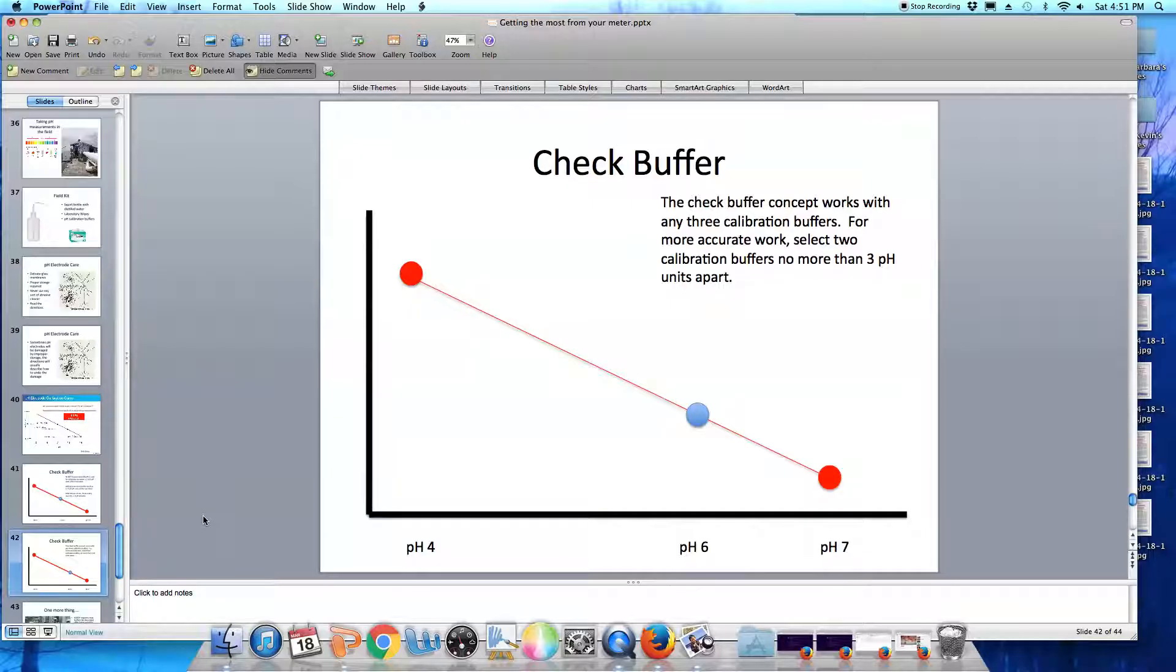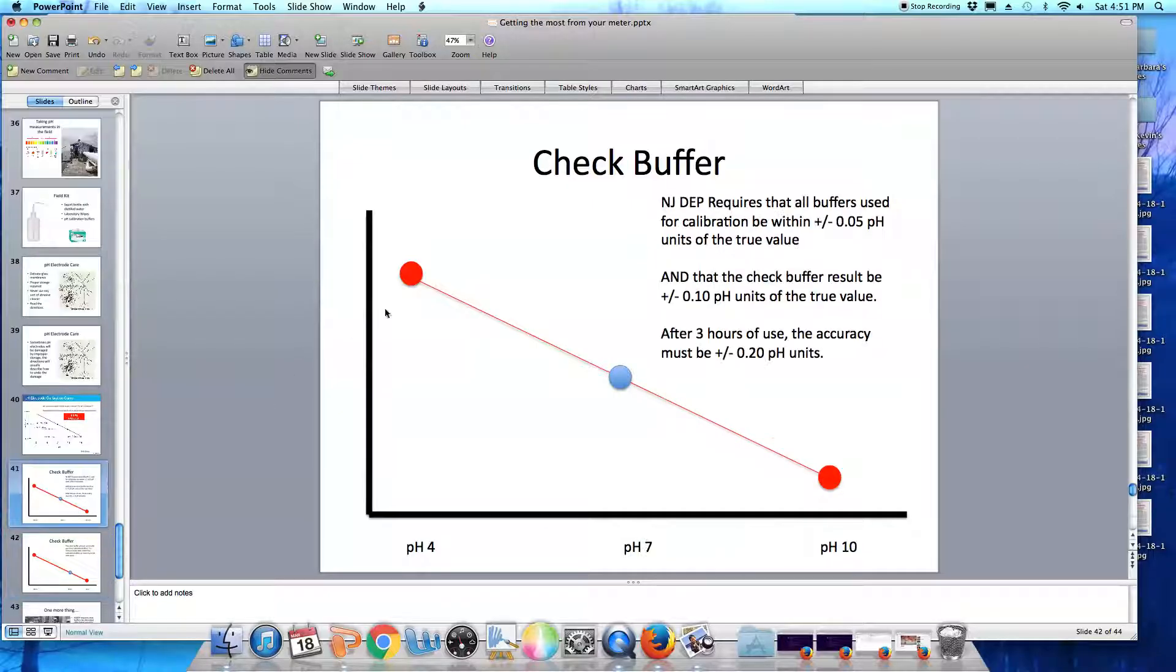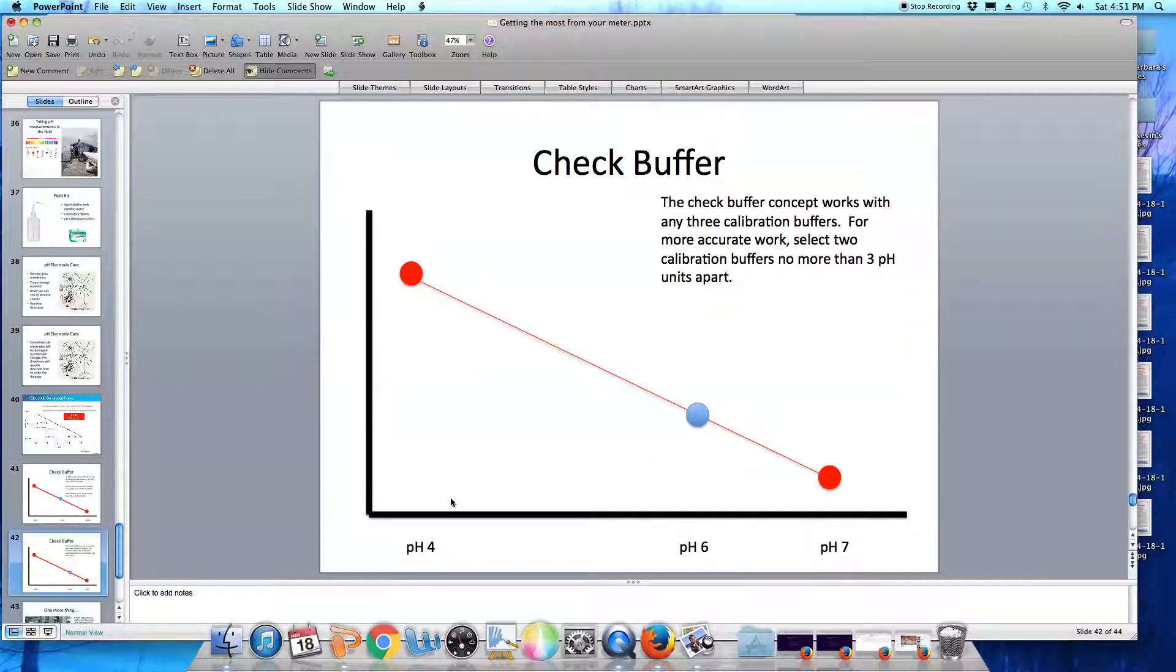The thing you have to remember about your pH scale is that it is logarithmic. In this example, we calibrated our meter with two pH buffers that were 6 pH units apart. Even though these are only 6 pH units, because the scale is logarithmic, it represents several orders of magnitude difference in the hydrogen ion concentration. So for really accurate measurements, you may want to calibrate with two buffers that are no more than 3 pH units apart.